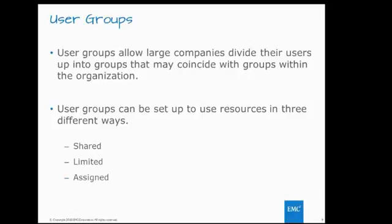User groups can be set up to use resources in three different ways: shared, limited, or assigned. Shared is pool storage at the organizational level — everyone pulls from it with no limitations. Limited also pulls from the shared pool but caps how much storage the user group can use. Assigned works by physically taking storage out of the organizational pool and specifically assigning it to a user group so it can only be used by that group.